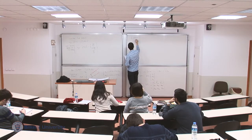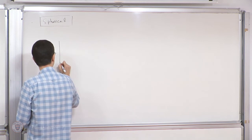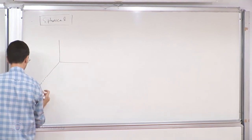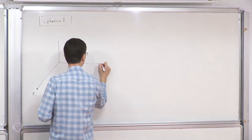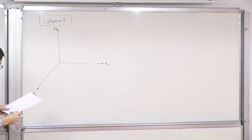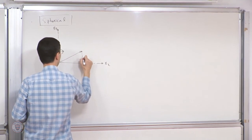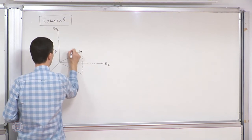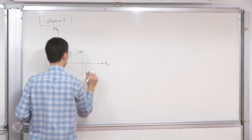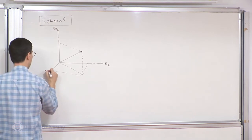Similarly, let's talk about the spherical coordinate system — that's the second particular choice we will be dealing with. Let me first draw the Cartesian coordinate system, pick a point, draw its position vector x.